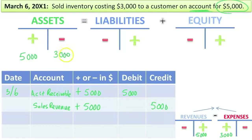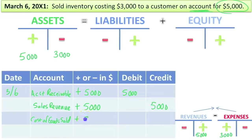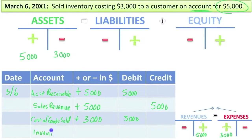Next, we have less inventory — less asset and more expense. I like to put the debit side first. Cost of goods sold went up — that's an increase of $3,000. When you increase an expense, as you can see, that's a debit. We decrease an asset: inventory, because that's what we gave away — decreased it $3,000. When you decrease an asset, that will be a credit entry.